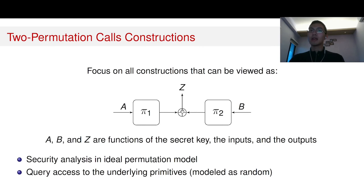Then the security analysis of such constructions is usually performed in the ideal permutation model, where the attacker has query access to the construction. The attacker also has query access to the underlying primitives, pi_1 and pi_2, which are modeled as random. Therefore, in order to use the Mirror Theory, we need to handle those primitive queries.